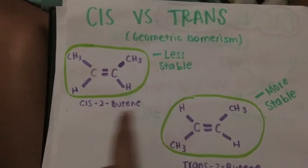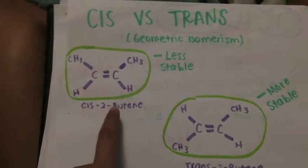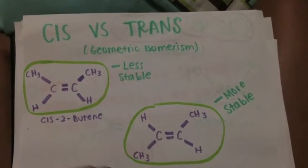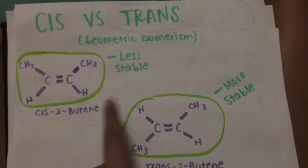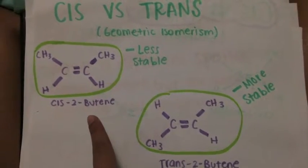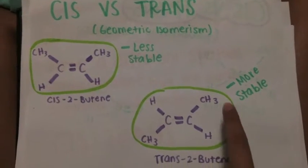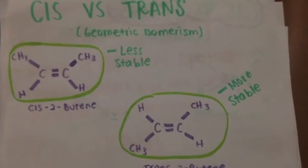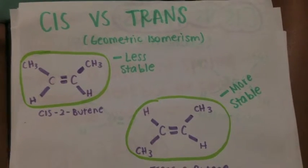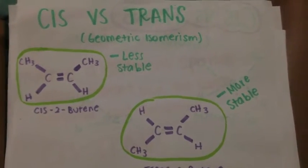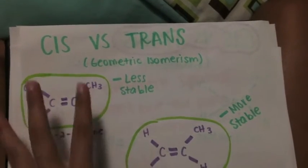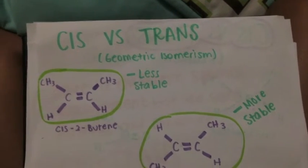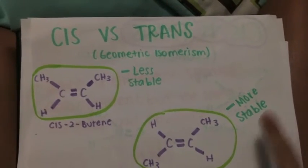Here you can see that it is cis-2-butene. When there is a double bond between two carbons and the functional groups are on opposite sides, it is a trans-alkene. Here is trans-2-butene. Because of the spatial arrangement, the cis will always be less stable than the trans.